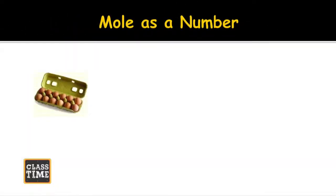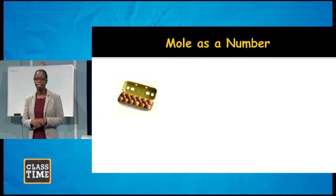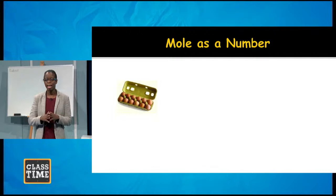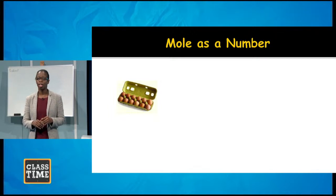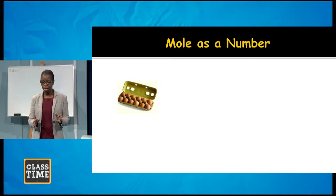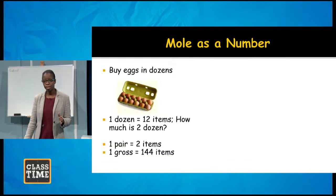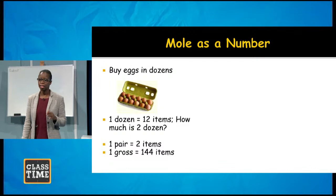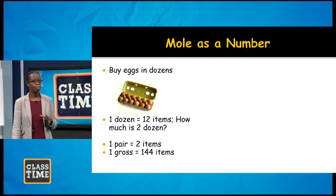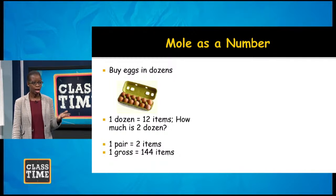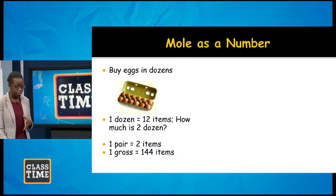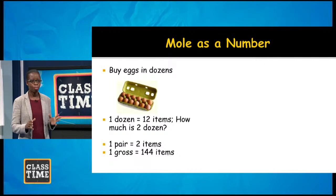Let's make this simpler. When you buy eggs at the supermarket, you may see them sold as a dozen eggs. We know that a dozen represents 12. Whenever we think of a dozen items, we're thinking of 12; half a dozen is six. In the same way, a pair of anything is two, and one gross would be 144 items. When we think of a mole as a number, what are we talking about?